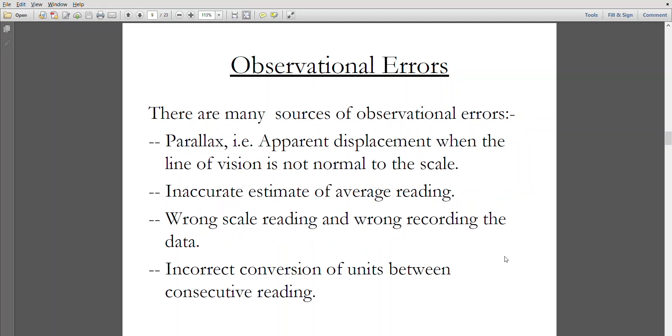Observational error. As we saw in the first slide, observational errors or parallax errors - parallax error is defined as an apparent displacement in the sight when the line of vision is not normal to the scale of the reading. This results in inaccurate estimate of the average reading.